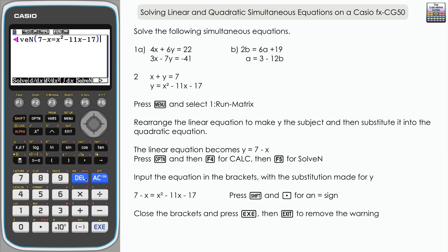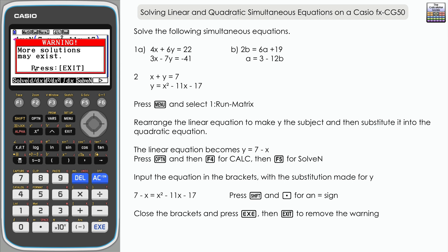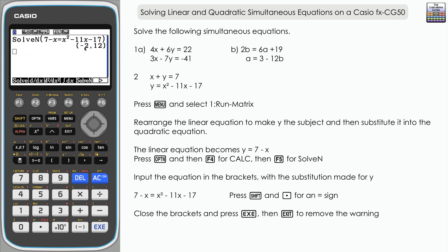We get a warning that more solutions may exist — for example, complex solutions — but this will give us all the solutions we need, so just press exit. Here we have the two values, which are our solutions for x. We get two sets: x equals negative 2 and x equals 12.